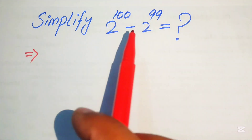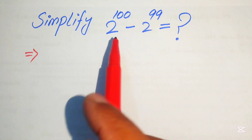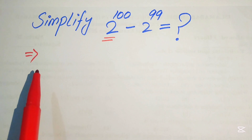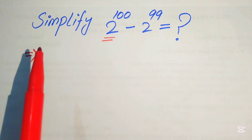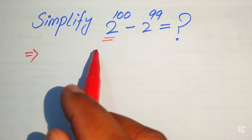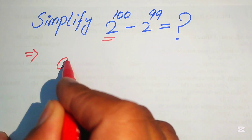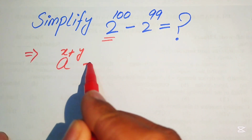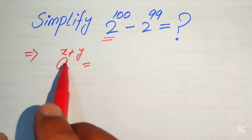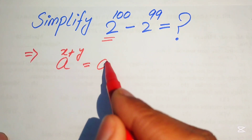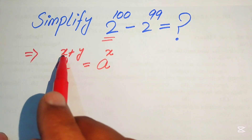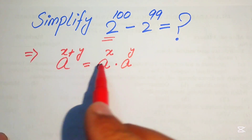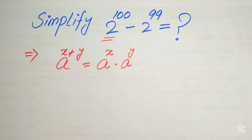We need to do some working on the first part of this expression. We make some manipulation on this term, and then we can easily subtract it by 2 to the power of 99. We apply the rule we already know: if you have a to the power of x plus y, then we break its exponent as a to the power of the first part multiplied by a to the power of the second part.